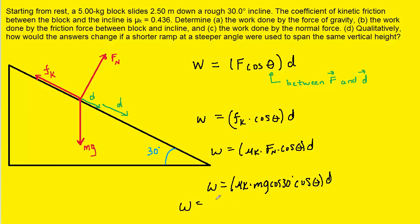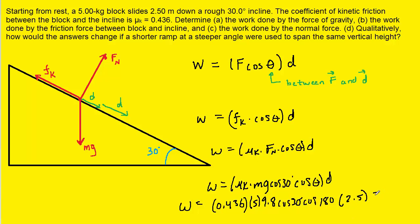Let's plug in the known values. The coefficient of kinetic friction was stated to be 0.436. The mass is 5, g is 9.8, the cosine of 30° gives the normal force, the angle between friction and displacement is 180°, and the displacement is 2.5 meters. When you work that out you should get about negative 46.3 joules. This is the correct answer to part B.